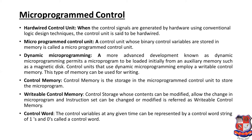The third one is dynamic micro programming — a more advanced development known as dynamic micro programming, which permits micro programs to be loaded initially from an auxiliary memory such as a magnetic disk. Control units that use dynamic micro programming employ a writable control memory. This type of memory can be used for writing from auxiliary memory, meaning the magnetic disk may store information required for control.